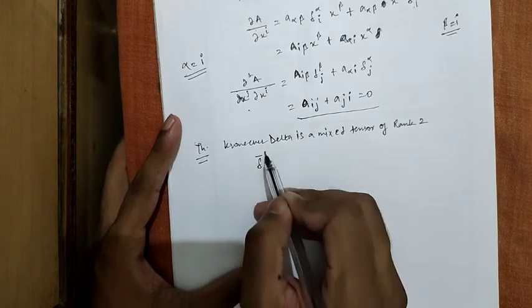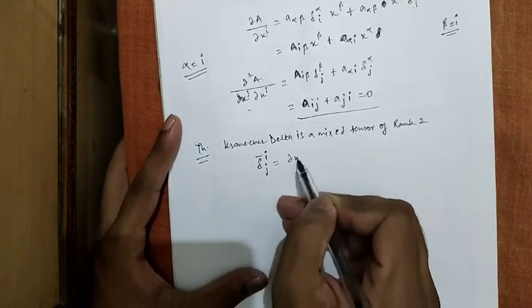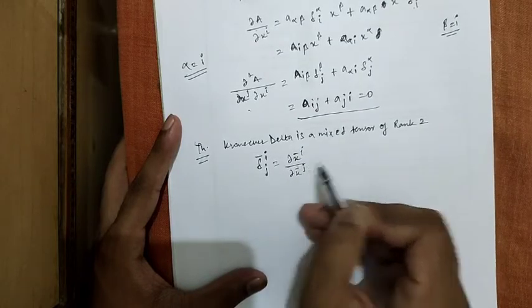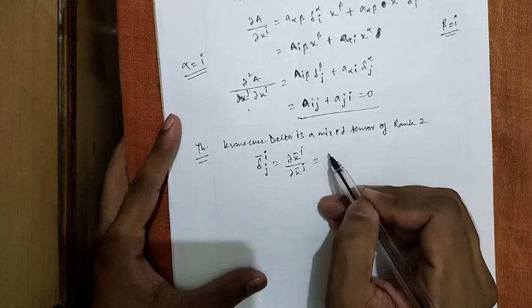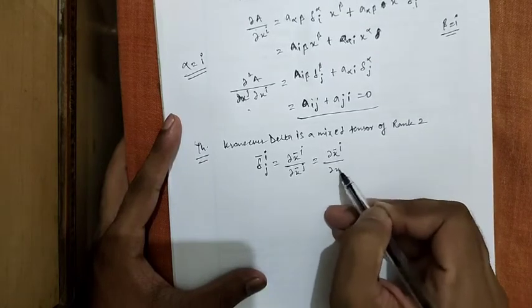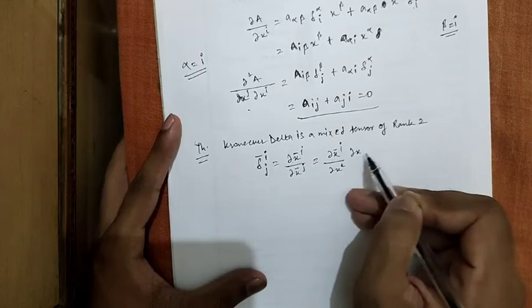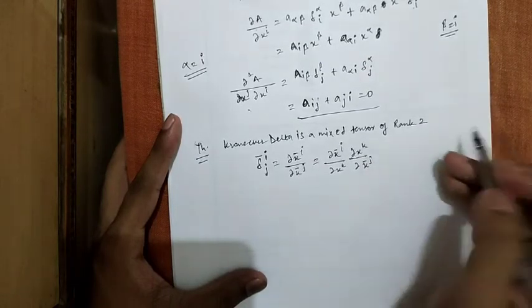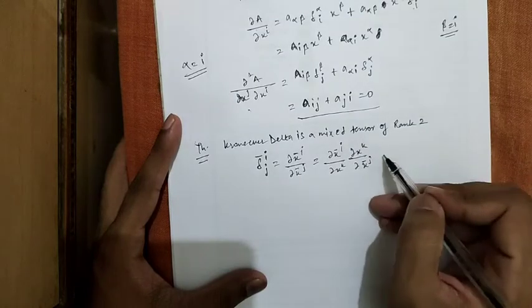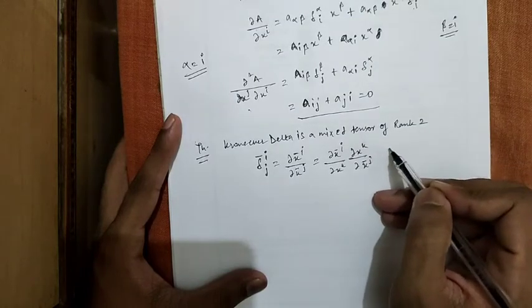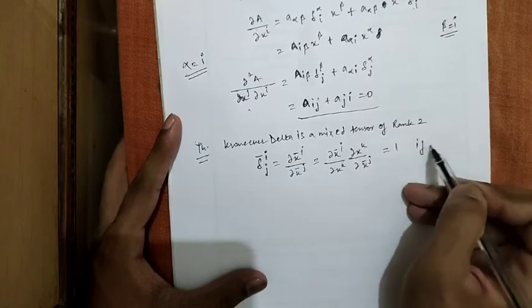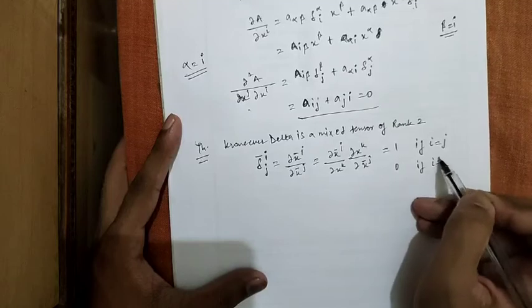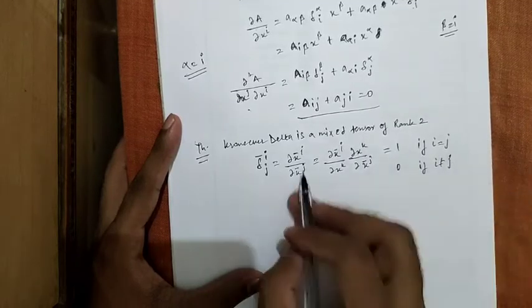Now, we know that Kronecker delta del_ij can be represented as curl x_bar i over curl x_j, which can also be written as curl x_bar i by the chain property, chain rule, which equals 1 if i equals to j and 0 if i not equals to j.